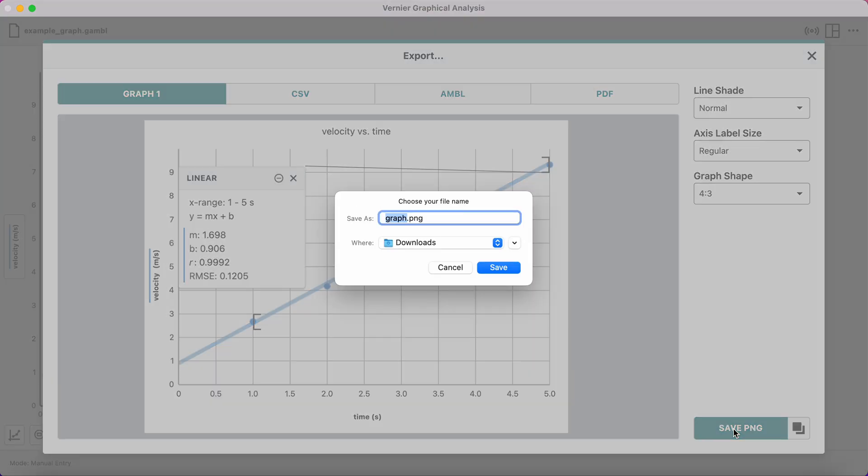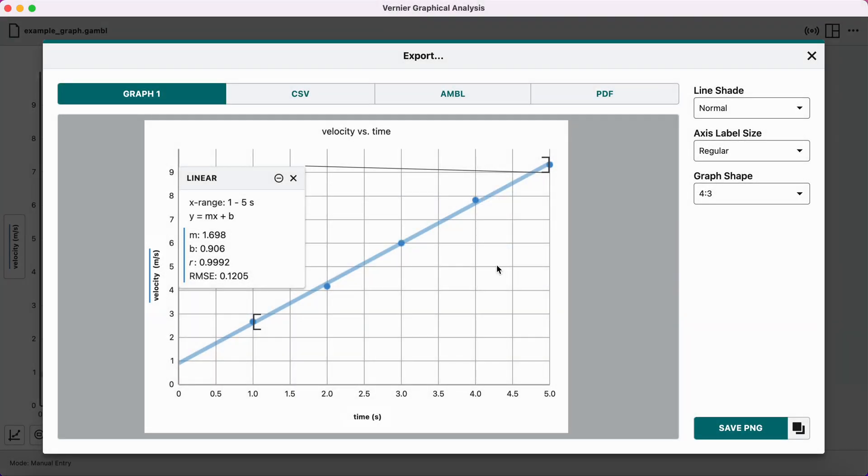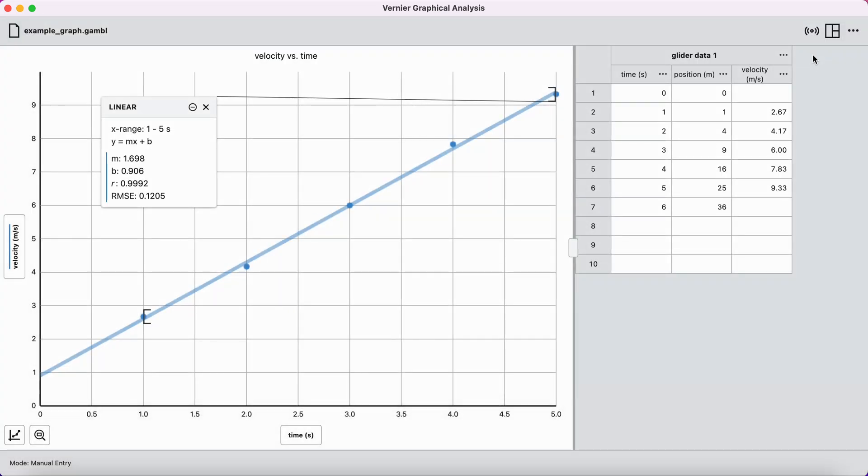Now, I can upload. I'm going to name this VelocityTimeGraphGlider, save it in my downloads, and now I'm ready to go. And that's how you create a velocity time graph using the tangent tool in Vernier Graphical Analysis.